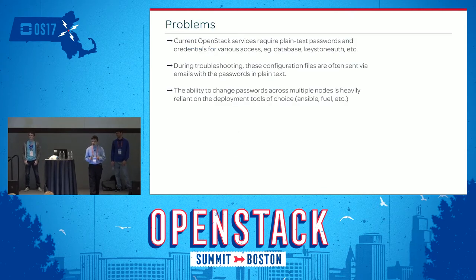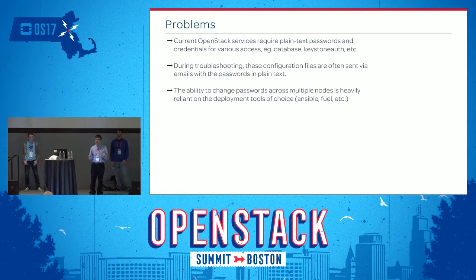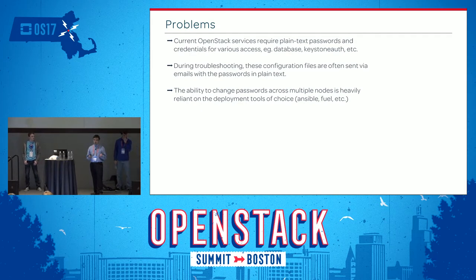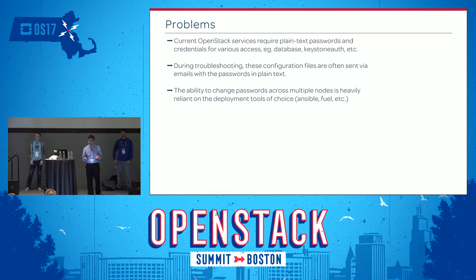The problem right now is: if you want to deploy an OpenStack Glance, there are configuration files sitting in /etc/glance.config, and in there there is database connection information, the Keystone service account with passwords — and those are all in plain text so that the Oslo.config can read and make the connection.